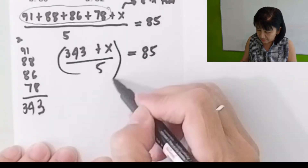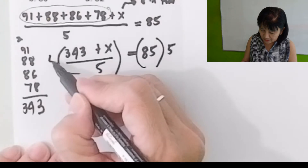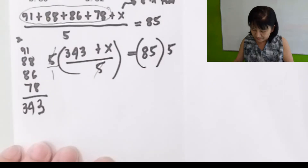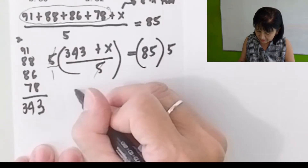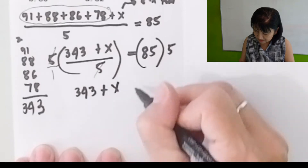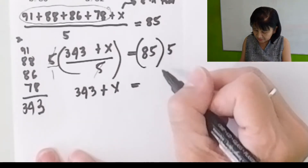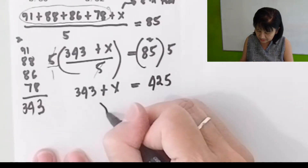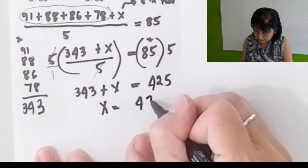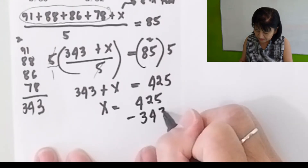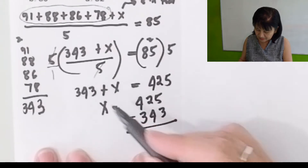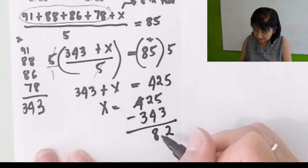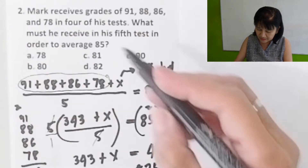Multiply both sides by 5. Cancel 5. You will have 343 plus x equals 85 times 5, which is 425. So x is 425 minus 343. 5 minus 3 is 2, 12 minus 4 is 8 (borrowed 1). So x equals 82. The correct answer is 82.